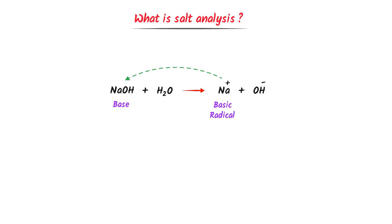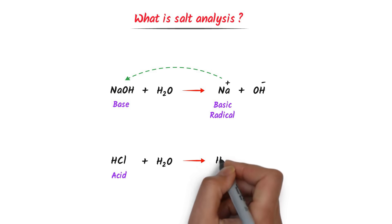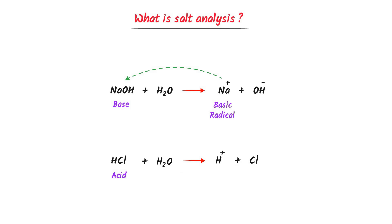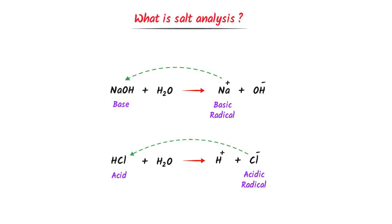Secondly, consider an acid like HCl. When we add some water to it, the acid will ionize into a hydrogen ion and a chlorine ion. This negative chlorine ion is known as an acidic radical, because this chlorine ion belongs to the acid HCl. So we call it acidic radical.